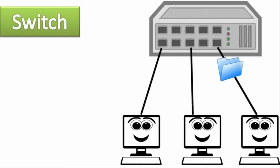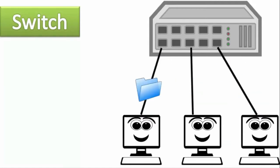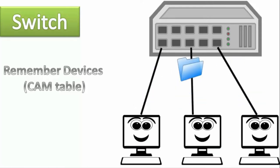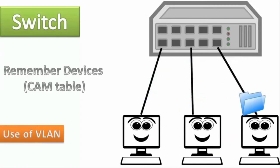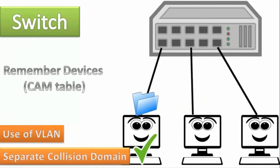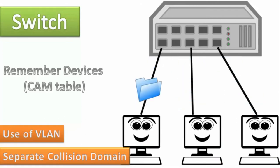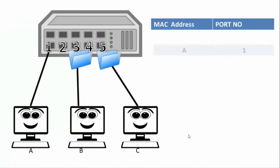Another device is a switch, which is smarter than a hub. It remembers devices using its CAM table so it does not send unnecessary data to every port. It uses virtual LAN and also creates separate collision domains so that two computers sending and receiving data seem to be connected on a single logical LAN.